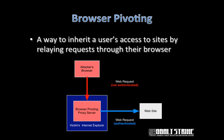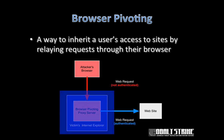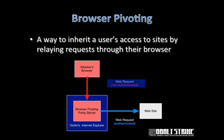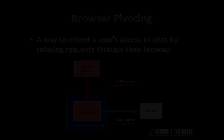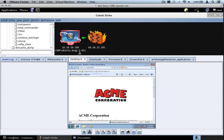Let's talk about Cobalt Strike's browser pivoting. A browser pivot is a proxy server that injects into the target's Internet Explorer browser. When you, the attacker, browse through a Cobalt Strike browser pivot, you will browse the web with access to any website that your target has logged into. When you use browser pivoting, you must inject into a child Internet Explorer tab's process. Let's go through a quick demo.